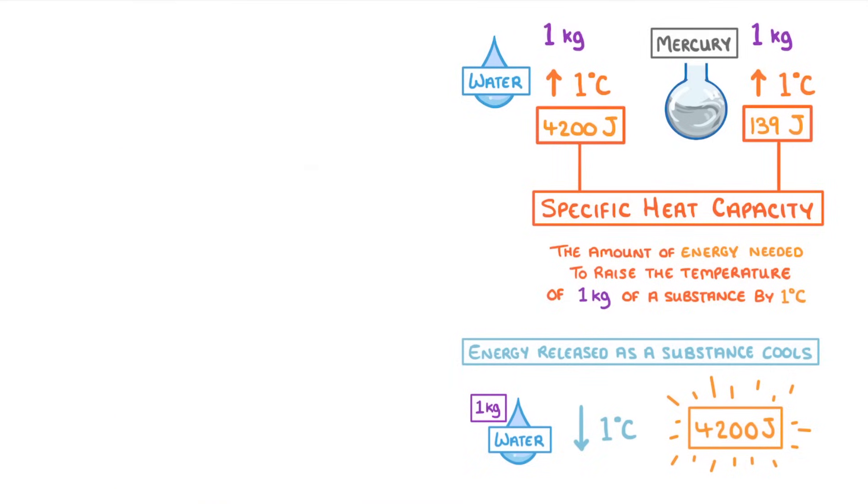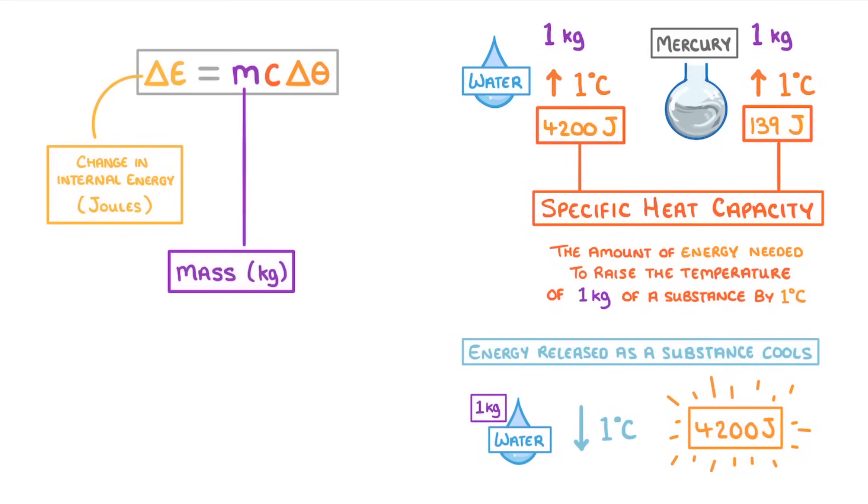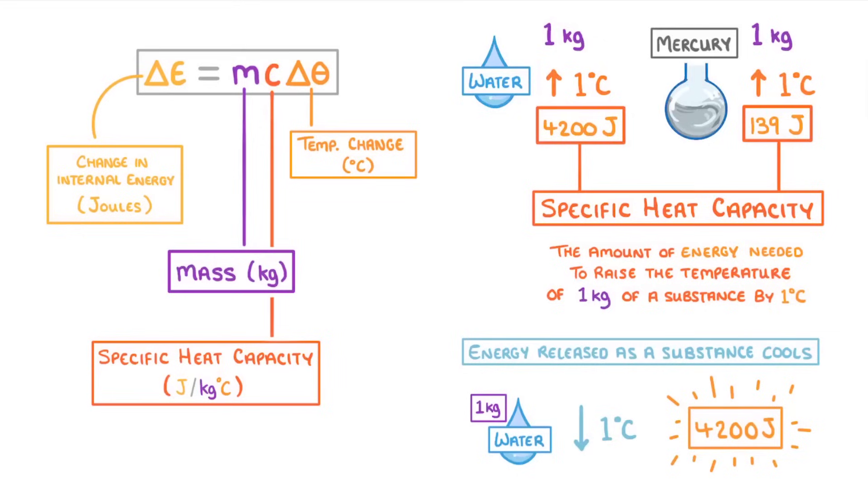We can put this idea into an equation, where the change in internal energy is equal to the mass times the specific heat capacity for that particular substance, times the change in temperature, with the triangles meaning change, and the zero, the line through it, being a theta sign, which here means temperature.